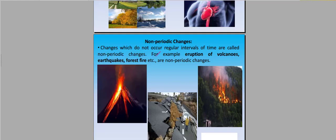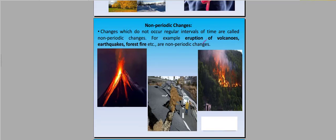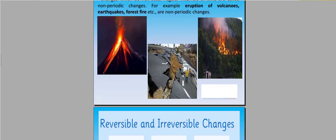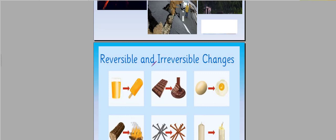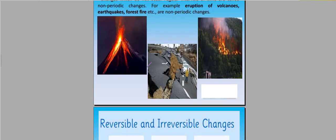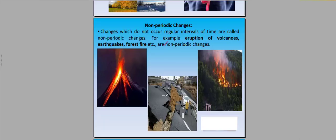Non-periodic changes do not occur at regular intervals of time. For example, eruption of volcanoes, earthquakes, forest fires are non-periodic changes. When the volcano erupts, when earthquakes occur, we have no fixed intervals or specific time interval for these events.